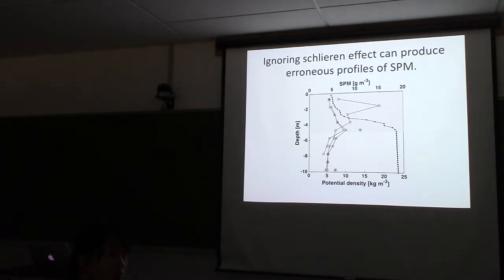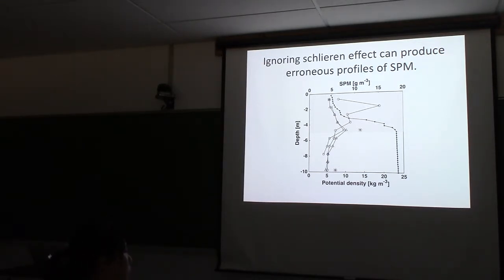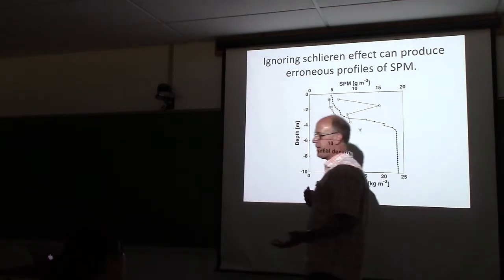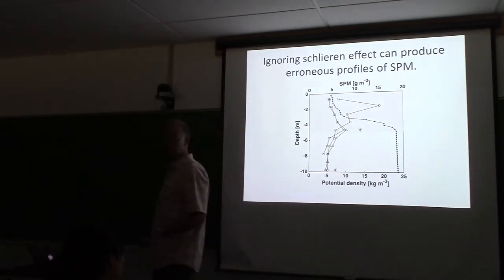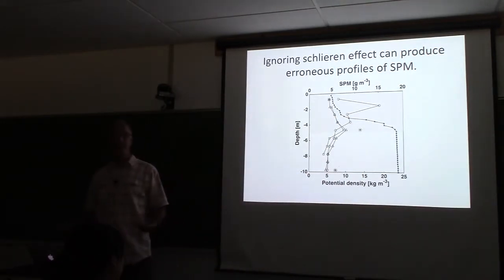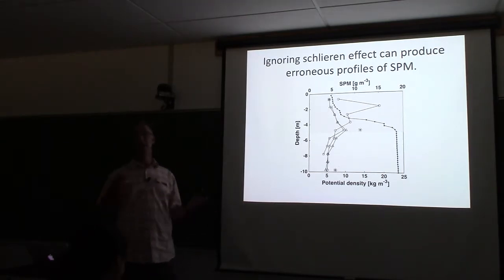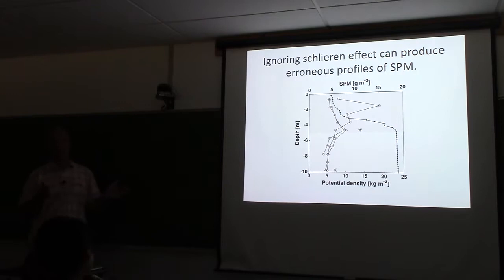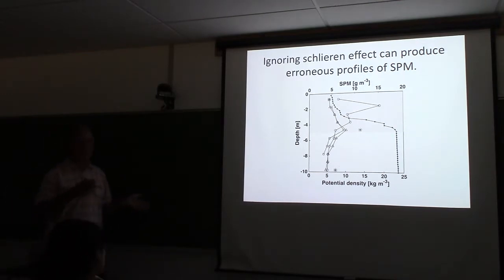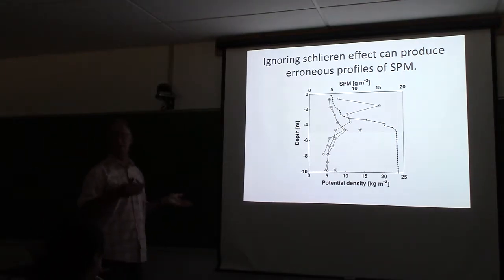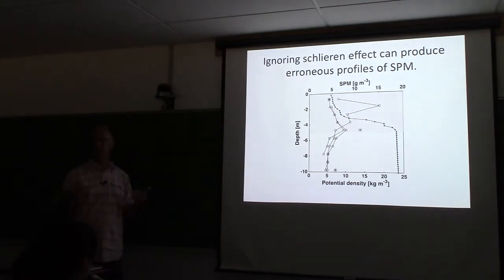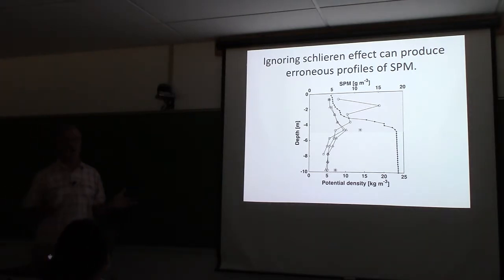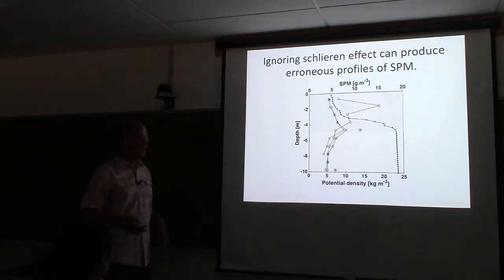The backscattering sensor provides a further independent confirmation. The concern was always how you can pump your sample when you know you might be destroying aggregates. But we've found that the relationship between the optical property and mass doesn't depend on size - so it doesn't really matter that you break them up, you still get a robust estimate.